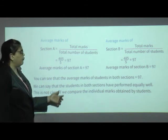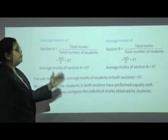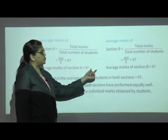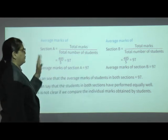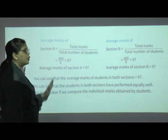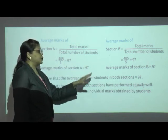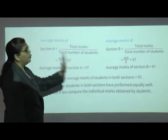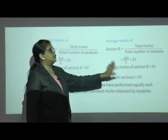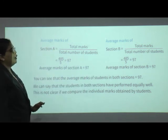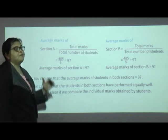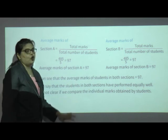This is not clear if we compare individual marks obtained by each student. If you individually compare the marks of the first student of Section A with Section B, we cannot get a clear idea. It is not possible to compare student by student across sections. So it is not clear by doing it individually. But when we calculate the average, we can say both sections have performed equally — they got an average of 97 marks in the mathematics subject. Before solving, read the statement and write the formula — it will help you to solve the example.